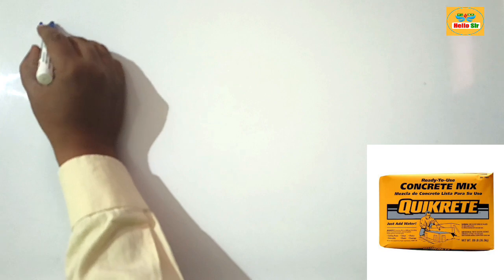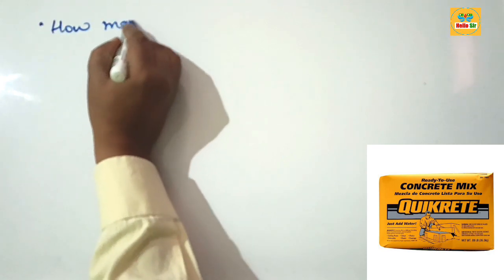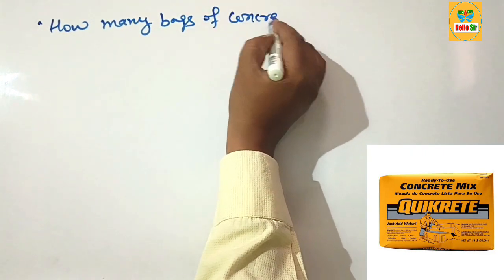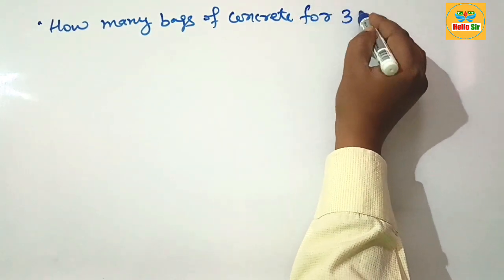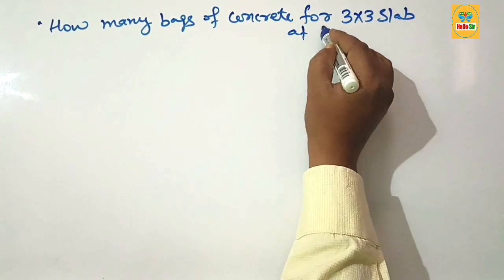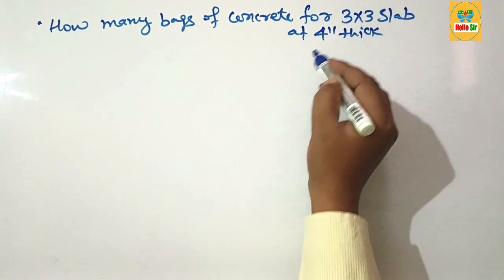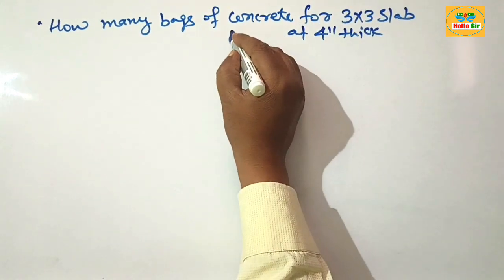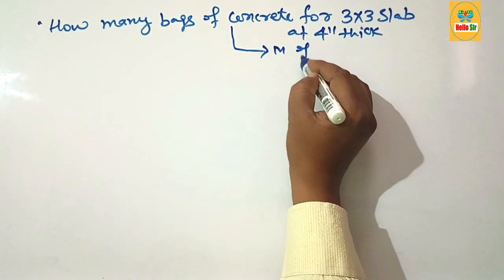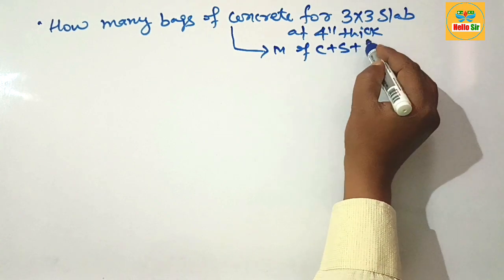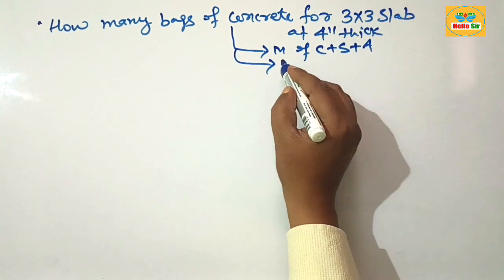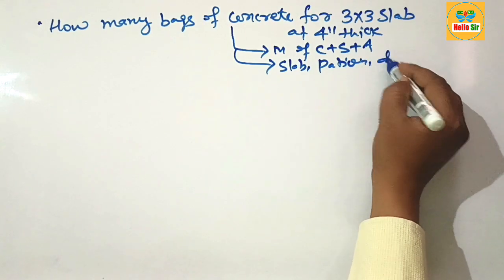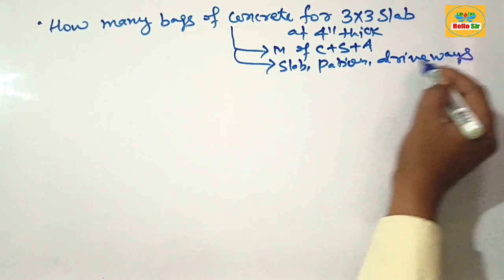Hi guys, in this video we learn about how many bags of concrete do I need for a 3 by 3 slab at 4 inches thick. The thickness of the slab is 4 inches and the slab dimension is 3 foot by 3 foot. As you know, concrete is a mixture of Portland cement, sand, and aggregate, and it is used for many structures like slab, patio, driveway, sidewalk, and more.